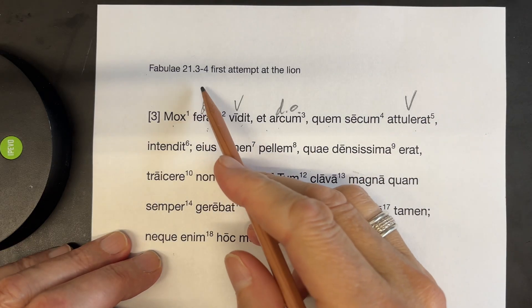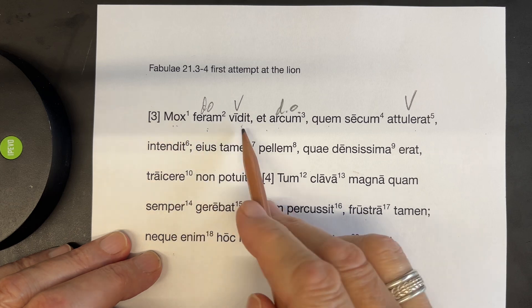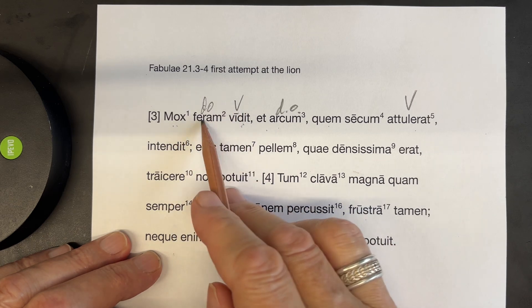This is Fabulae 21, 3 to 4. Mox feram vidit. Soon he saw the beast. There's your V, there's your DL.